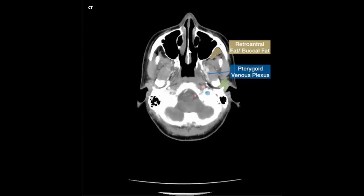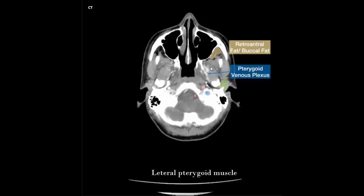Nasal septum, nasal cavity, right and left maxillary sinus. Temporalis muscle, masseter muscle, lateral pterygoid muscle, pterygoid plate. Internal carotid artery, jugular cavity, jugular vein, vertebral artery.